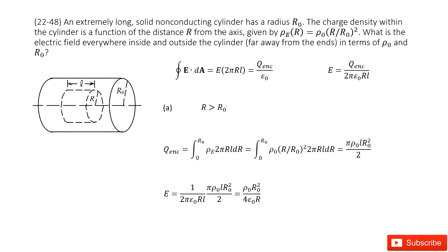The next case asks what happens when r is larger than r0. For r greater than r0, we draw the Gaussian surface outside the cylinder, like this one. The electric field times the Gaussian surface is still 2πr times l, where this r is now the larger radius. This equals the enclosed charge divided by epsilon-naught. We write the function for E.